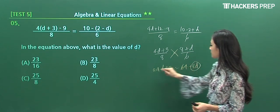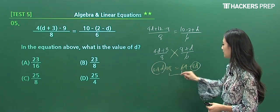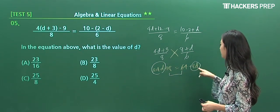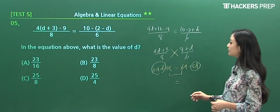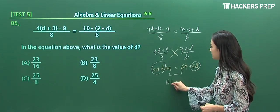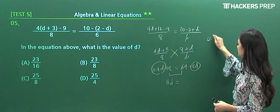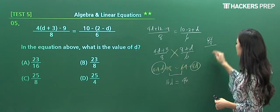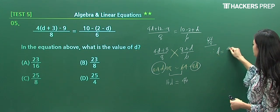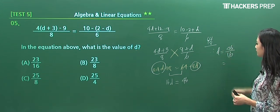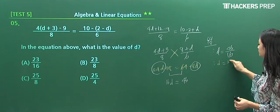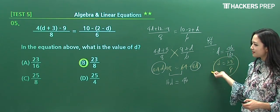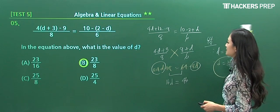Our final step: group everything that involves the variable and the constants. Left side becomes 24d minus 8d, which is 16d. Right side: 64 minus 18 equals 46. So we can conclude that d equals 46/16, which can be reduced to 23/8. There's an answer choice that matches this value: B.